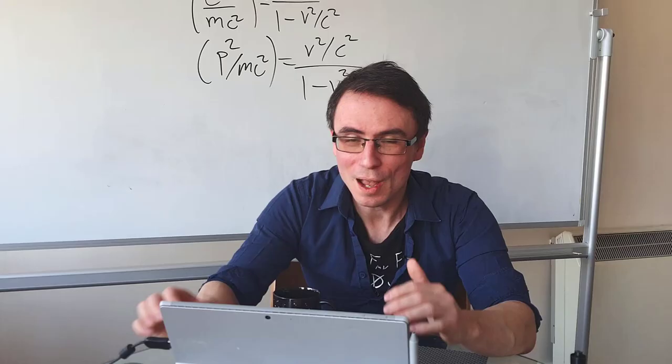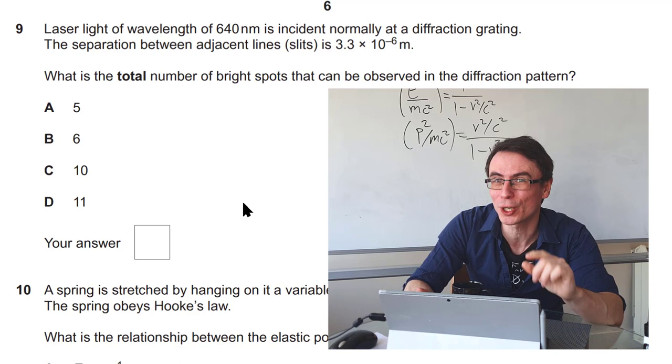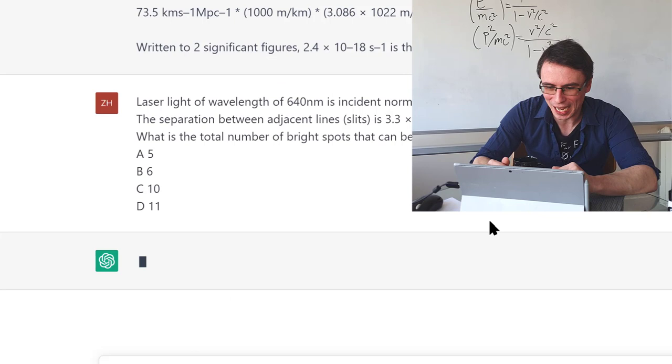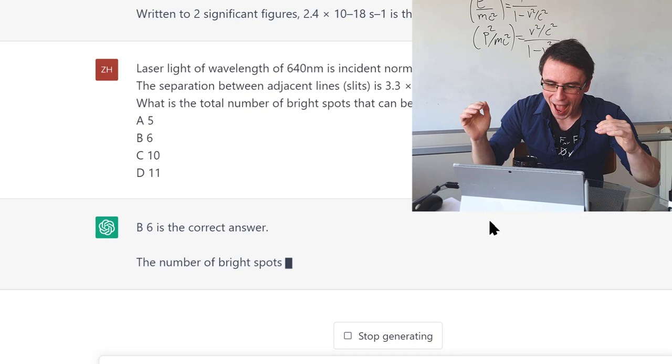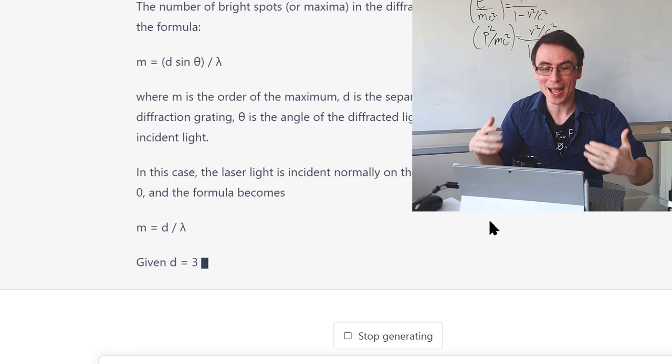I'm really curious how it's going to do on this next one. I remember setting this question at an exam and not that many people got this one correct because there is a trick to that question. Let's see if it will catch the trick in this question. It's computing, it's doing some physics and it's gotten it wrong, I'm afraid. B is not actually the correct answer. It's failing to take into account that there's going to be bright spots on either side of the central maximum producing a total number of 11 bright spots that are visible.